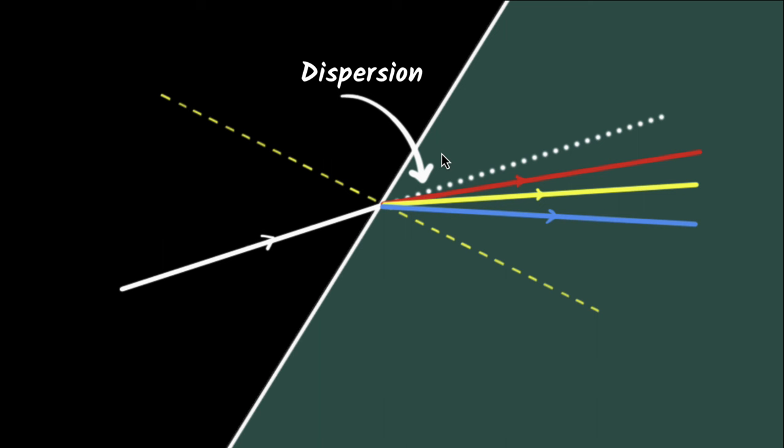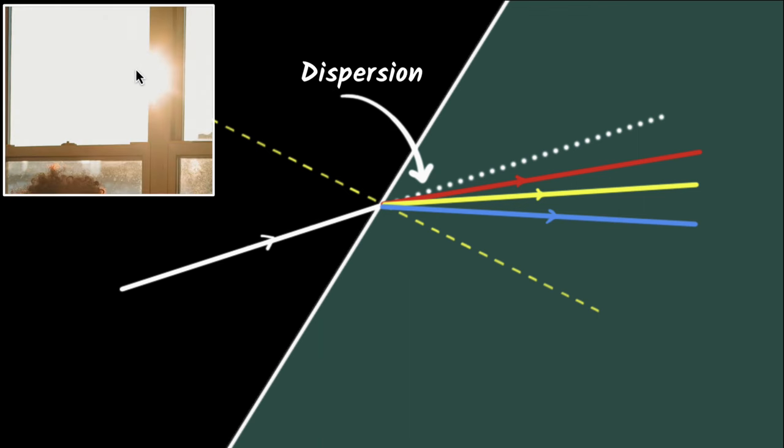But wait a second. You'll be wondering, well, if dispersion happens here, shouldn't dispersion happen everywhere? For example, when you see sunlight through a glass window, why don't we see colorations? Because dispersion should happen there as well, right? Well, that's a great question.